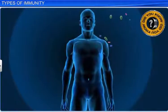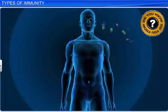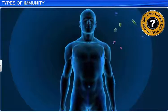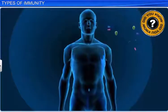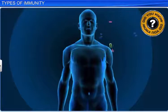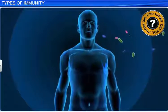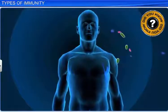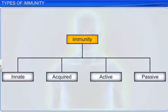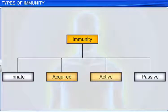Did you know that even though passive immunity provides immediate protection to the body against pathogens, the body doesn't develop any memory of the pathogen? This means that the body is at risk of being attacked by the same pathogen when infected by it later. Therefore, immunity can be innate or acquired. It can also be either active, if induced by an infection or a microbial attack, or passive, if provided with ready-made antibodies.